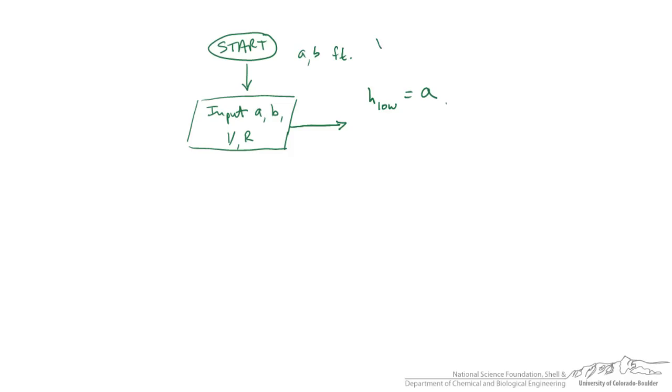Similarly, V is going to be in gallons. So we're going to have to make the conversion to cubic meters in our code at some point. We're going to say radius is in feet. H high is going to be equal to B. And then we're going to define an H mid as the average. So that's just A plus B divided by 2. So these are calculations that we're going to be doing in our code.